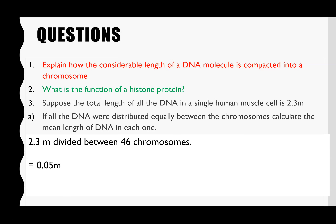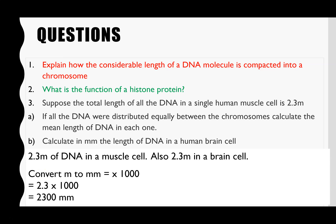Now the maths questions. We're told that the DNA in one human muscle cell is 2.3 metres in length. If all the DNA were distributed equally between the chromosomes, calculate the mean length of DNA in each one. We know the length is 2.3 metres and there are 46 chromosomes in a muscle cell, so 2.3 divided by 46 equals 0.05 metres.